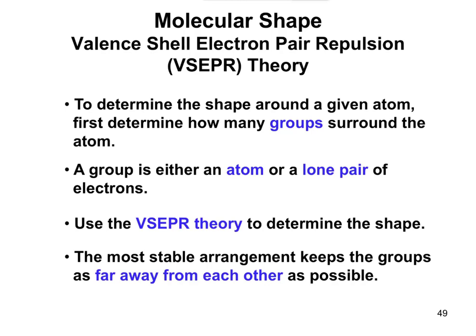This is really just stuff you need to memorize, but we're going to look at the shape formed around a particular atom as well as the bond angles. The idea with VSEPR theory is to keep the groups as far away from each other as possible.